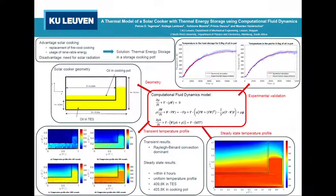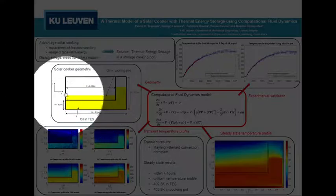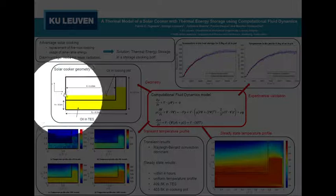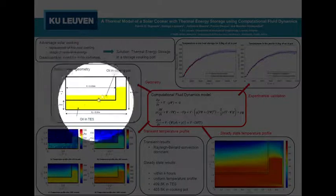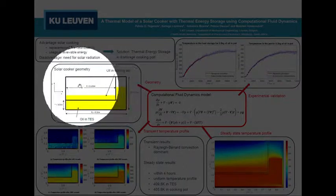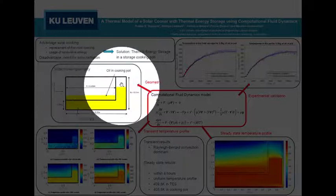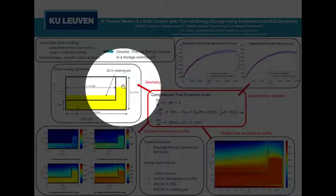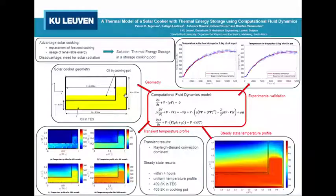So what is our geometry? We have an axisymmetric geometry, which means that the x-axis here to the left is the symmetry axis. And therefore, we have a cylindrical compartment to cook the food and we also have an L-shaped cylindrical compartment for the thermal energy storage system.